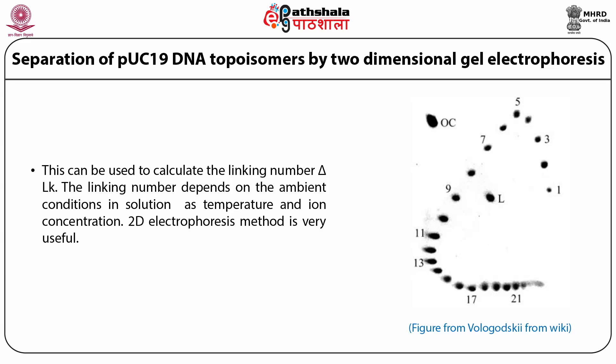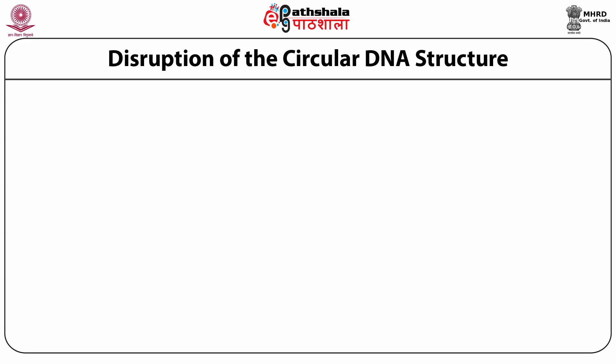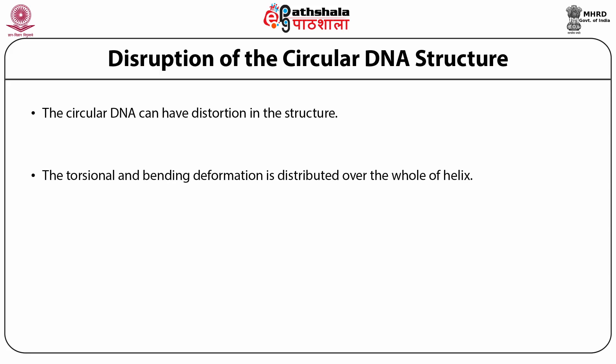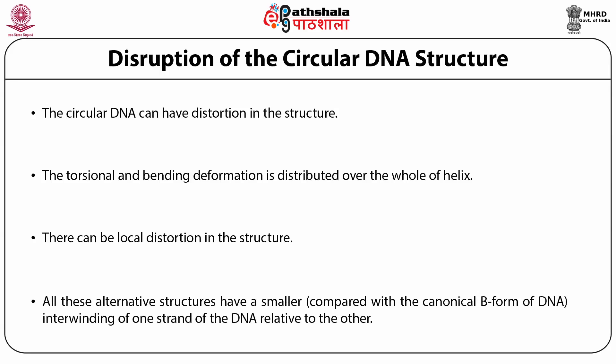Disruption of circular DNA structure: the circular DNA can have distortions in structure. Torsional and bending deformation is distributed over the whole helix. There can also be local distortions in other structures. All these alternative structures have a smaller interwinding of one strand of the DNA relative to the other strand compared with the canonical B form of DNA.